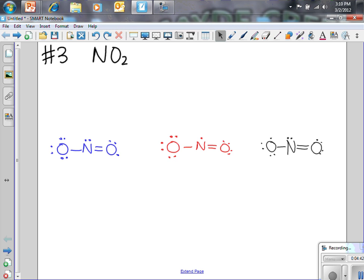And yes, you need to draw all three of them. And you need to have them separated by the double-headed arrows that we talked about today in class. Okay, but that would be how you draw the Lewis structure for nitrogen dioxide. And all three of those should be drawn on your paper.